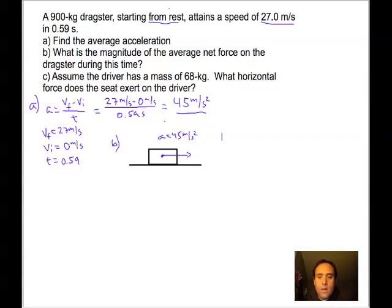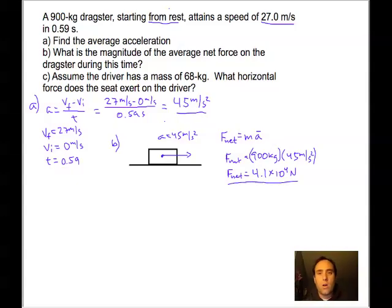We know that the net force, or the sum of the forces, is equal to mass times acceleration. So the force is equal to mass, which is 900 kilograms, times the acceleration which we calculated from part A, which is 45 meters per second squared. So the net force is equal to 4.1 times 10 to the fourth newtons. This is the force that the car must undergo in order to have that acceleration.